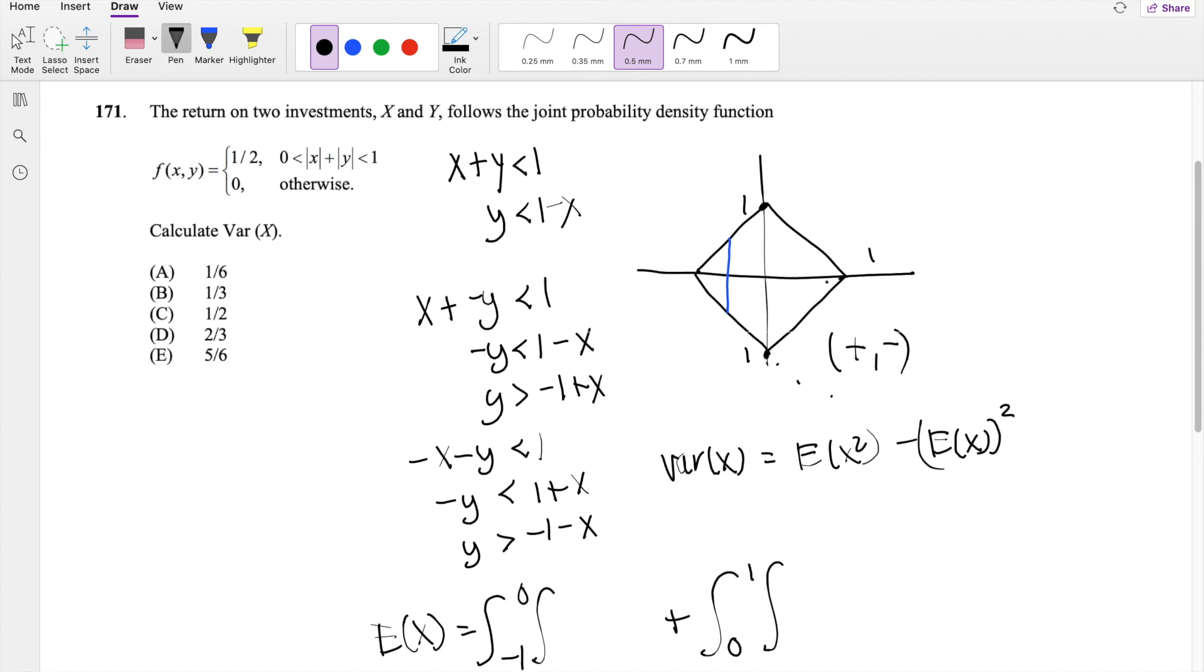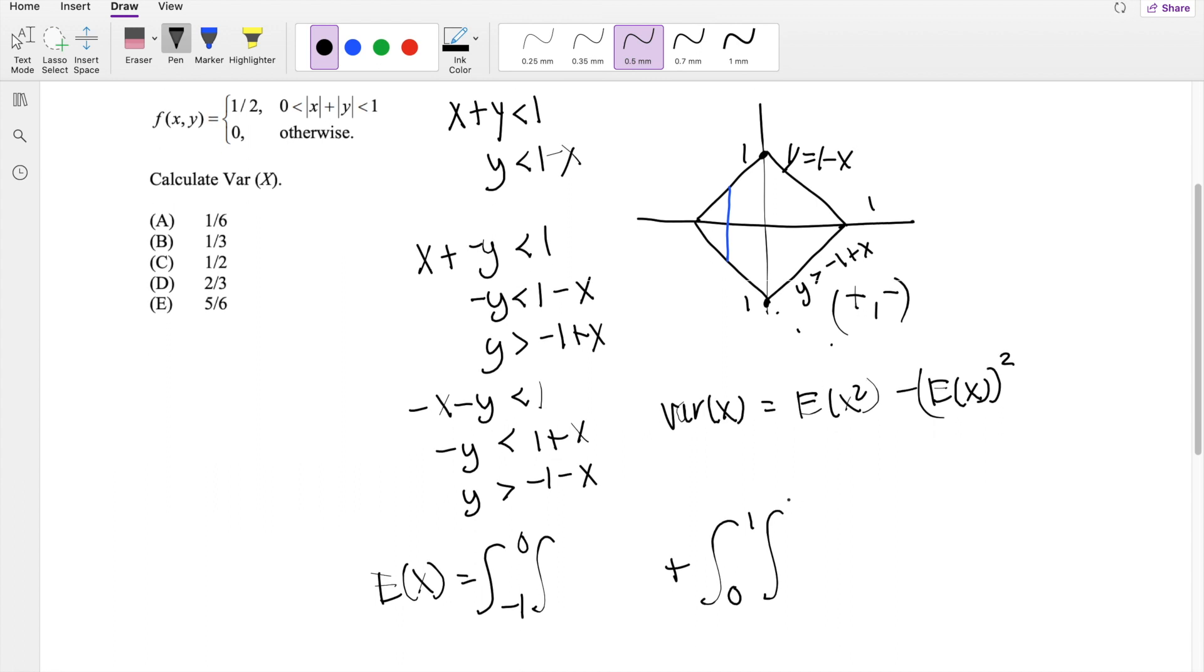And then I'm doing from 0 to 1. 0 to 1, we already figured these two lines out. The first one is y equals 1 minus x. This line here is y is greater than negative 1 plus x. So that's the two limits here, 1 minus x and negative 1 plus x of 1 half. And if we're finding x, we have to multiply by x, dy, dx.